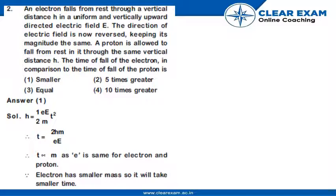Question 2 asks: An electron falls from rest through a vertical distance h in a uniform and vertically upward directed electric field E. The direction of electric field is now reversed, keeping its magnitude the same.